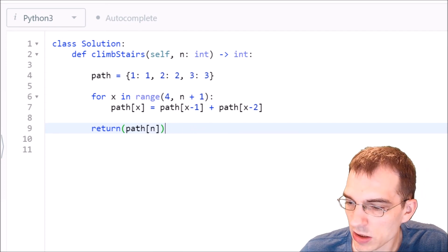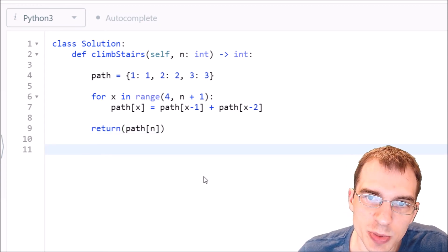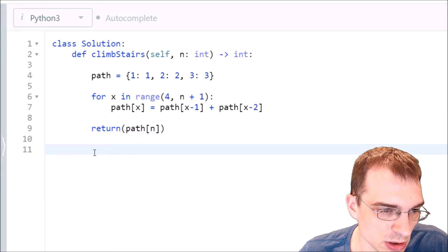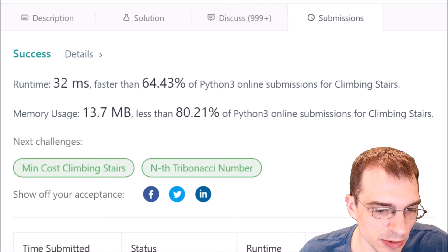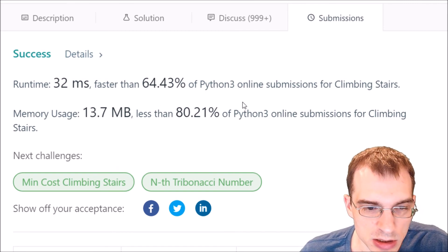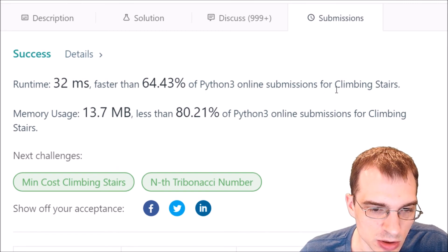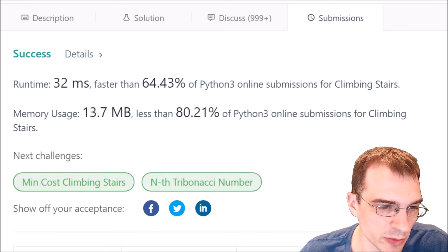So I'm going to go ahead and click submit on this one. Hopefully we did not make any mistakes. So let's pull over and check the result here as long as we didn't make any mistakes. Our code ran in 32 milliseconds, was faster than 64 percent of other Python 3 submissions. So a reasonably decent solution with the other ones that have been accepted here.